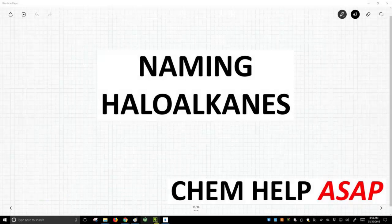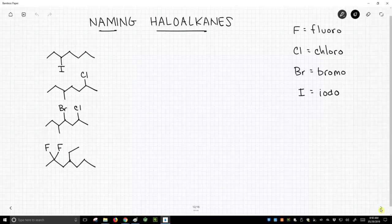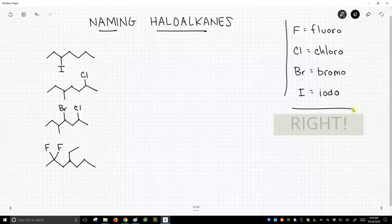Welcome to Chem Help ASAP. Let's jump right in and learn how to name haloalkanes or halogenated alkanes. Now the prefixes that we use to bring halogens in as groups are written in the upper left. Fluorine is fluoro, chlorine is chloro, bromine is bromo, and iodine is iodo.